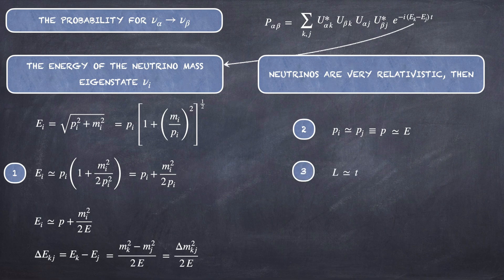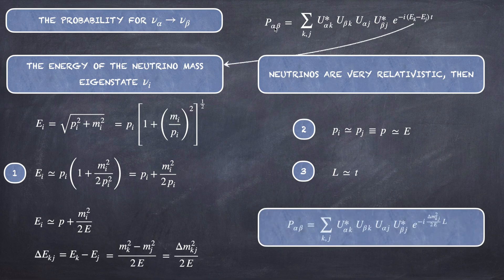The third approximation is that the distance traveled L is approximately equal to the time T. Therefore P_αβ becomes the double summation over K and J of the product of matrix elements times the exponential of −i Δm²_KJ L/(2E).